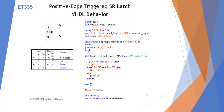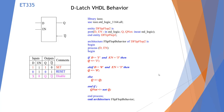Here I've added a positive edge triggered SR latch as a VHDL behavior. I added the statement: if clock'event and clock equals 1, which means the clock goes from 0 to 1 — a positive edge. We need to make sure each if has an end if, so we have two end ifs to close up our if statements.